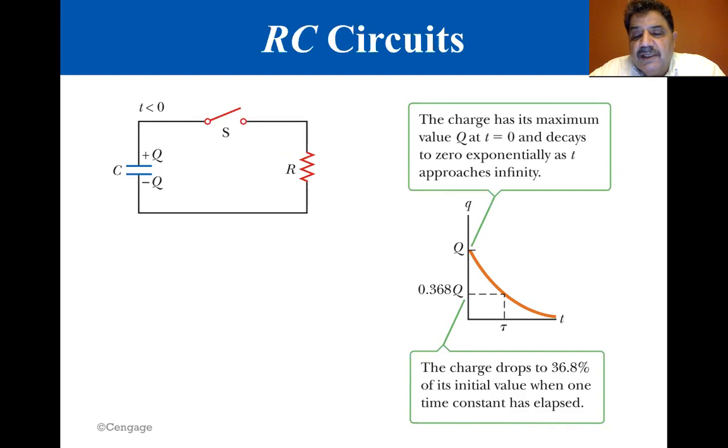If the switch is closed at t equals 0, the charge q on the capacitor varies with time according to the equation shown here. q equals Q e to the minus t/RC. The charge decreases exponentially with time, as you can see in the graph on the right.